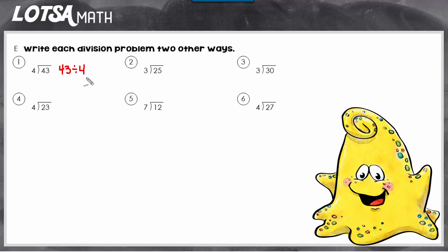And there's one other way you could write it. You could write it up and down like this, 43 divided by 4. Notice this looks like a fraction, and it is because all fractions are just division problems in disguise. When you see 43 fourths, that's just a division problem, 43 divided by 4.